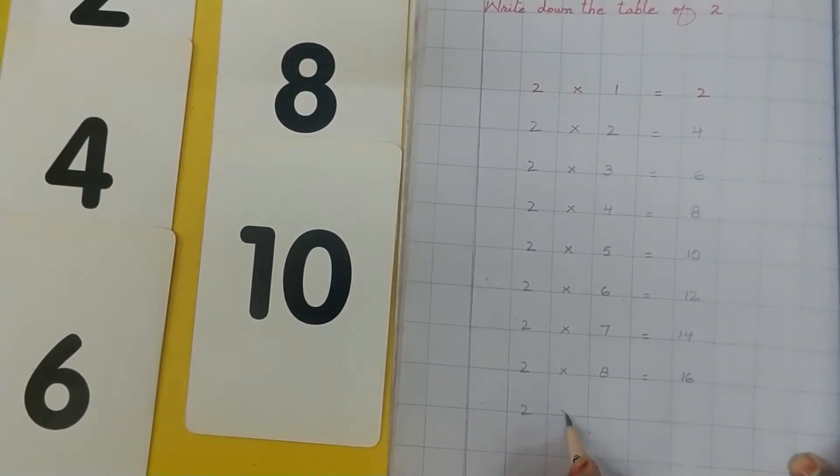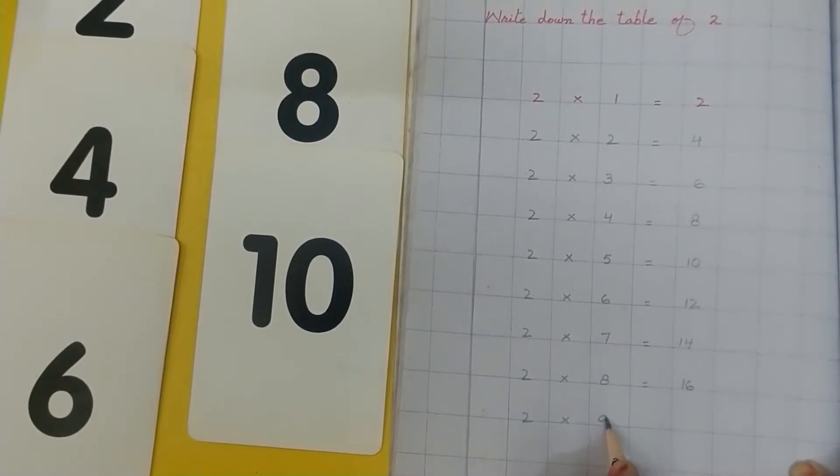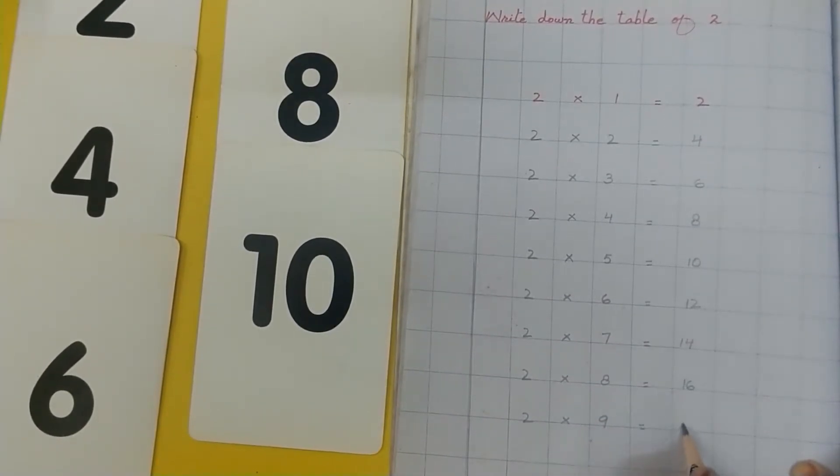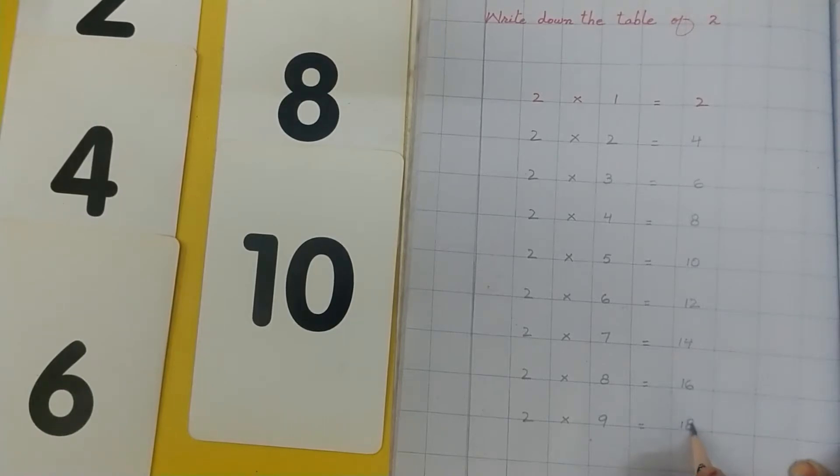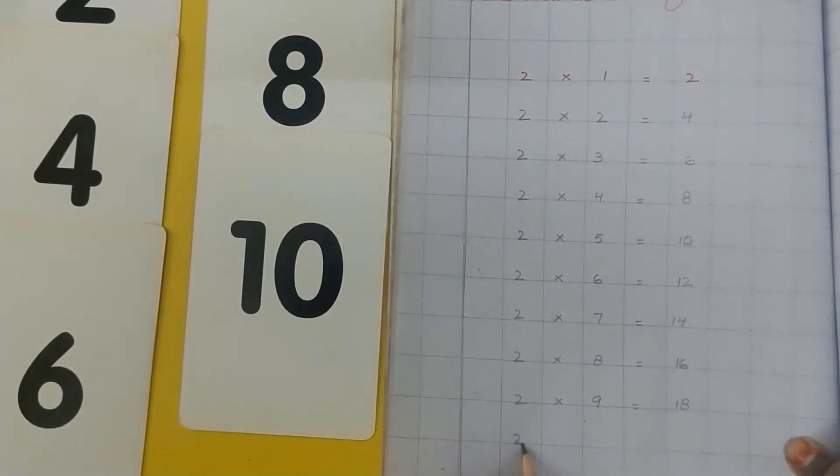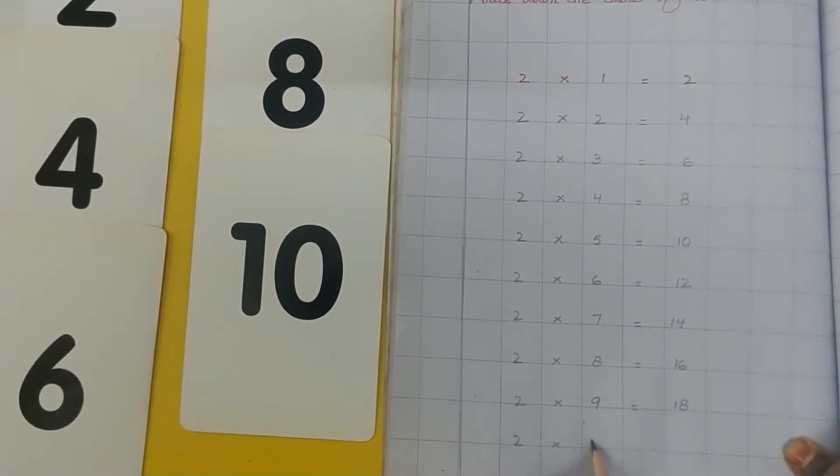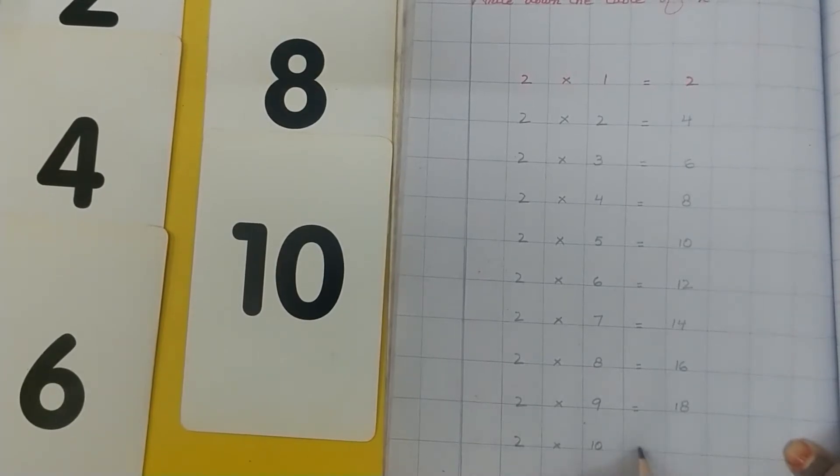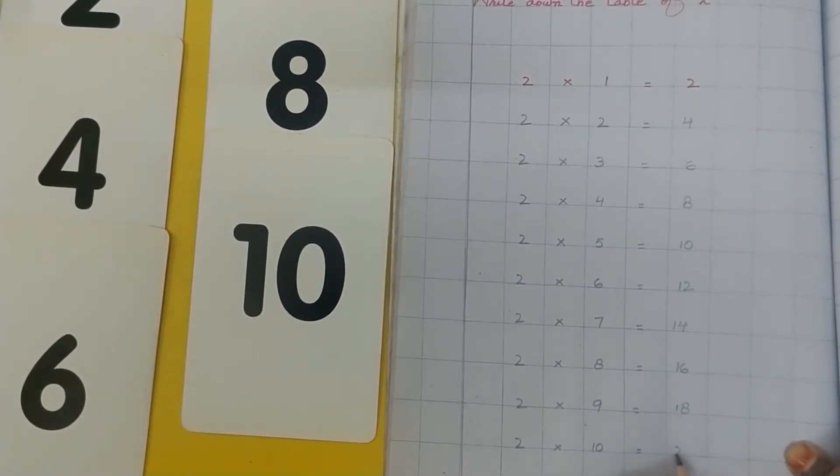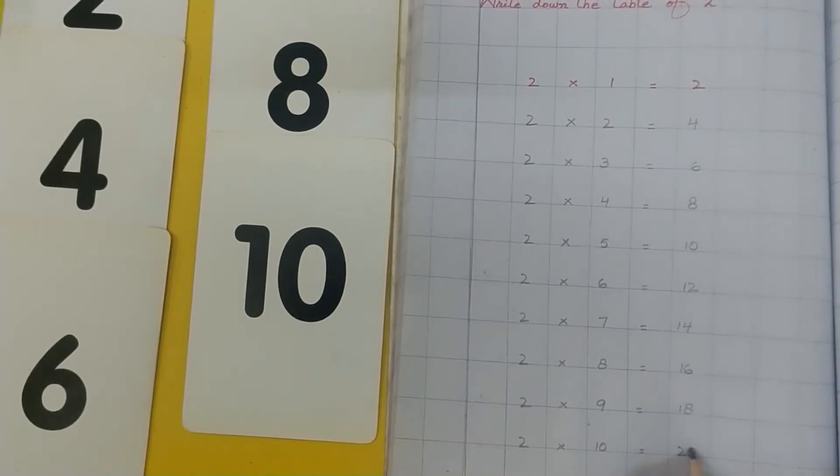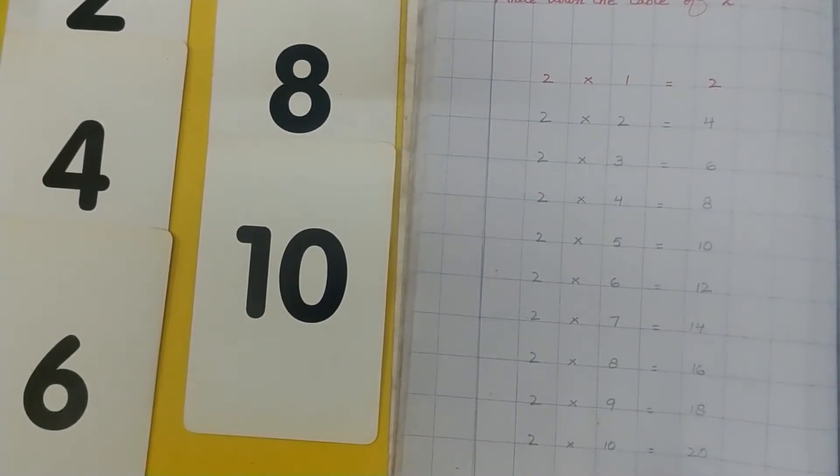2 multiplied by 9 is equal to 18. 2 multiplied by 10 is equal to 20. Learn table of 2.